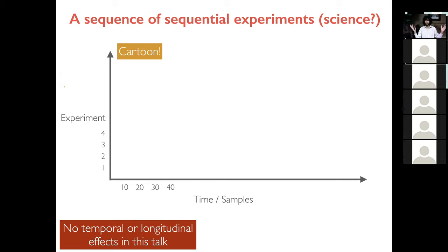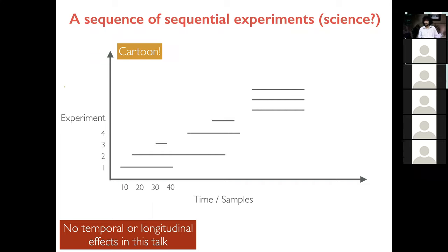Here's a cartoon abstraction for science. On the Y axis is experiment number, and on the X axis is time or the number of samples collected so far. Experiments start over time, collect some number of samples, then stop. At any given point, there could be multiple experiments running. The first experiment collected 40 samples, the second started a week later and ran for 80 samples, the third was very short with only 10 samples, and this goes on forever.